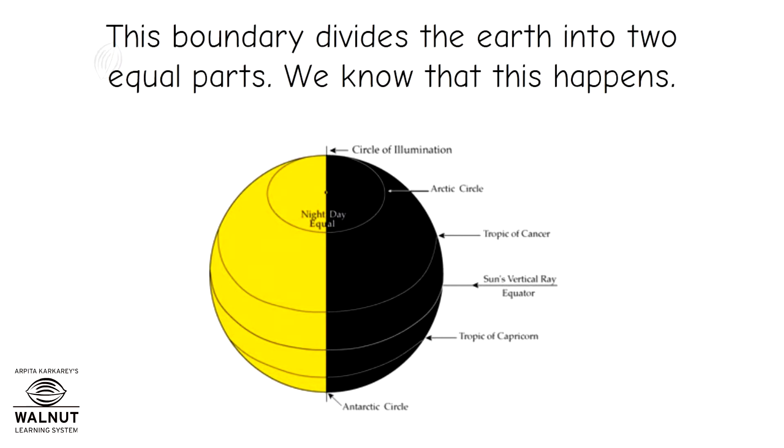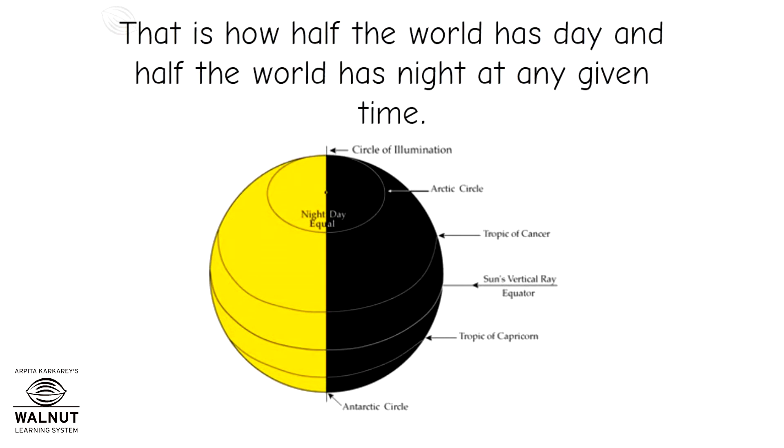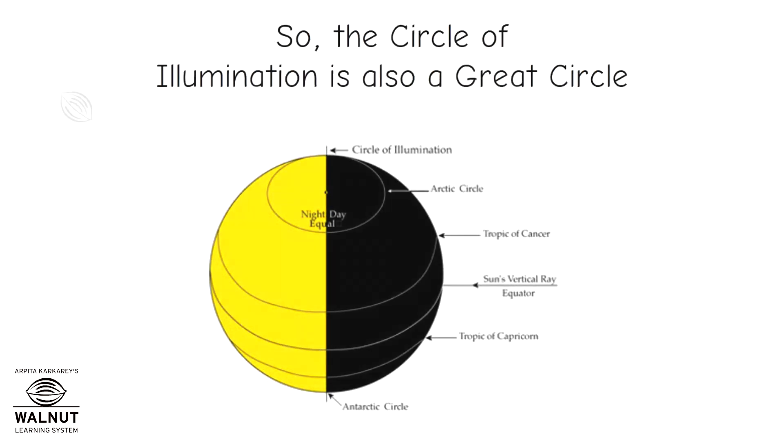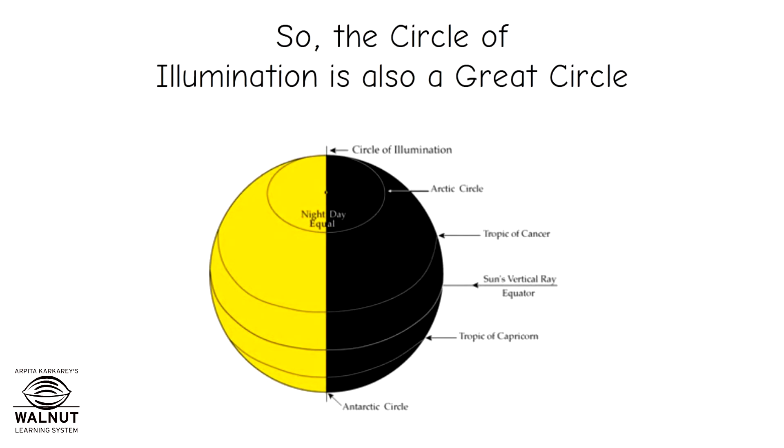This boundary divides the earth into two equal parts. We know that this happens. That is how half the world has day and half the world has night at any given time. So the circle of illumination is also a great circle.